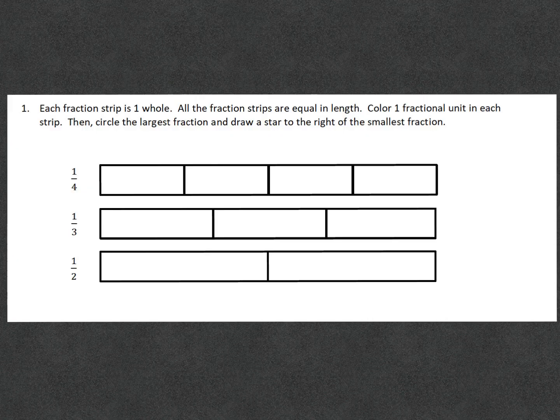Each fraction strip is one whole. All of the fraction strips are equal in length. Color one fractional unit in each strip. Then circle the largest fraction and draw a star to the right of the smallest fraction. So, because this fraction says one fourth, we will be coloring in one part of the whole four.